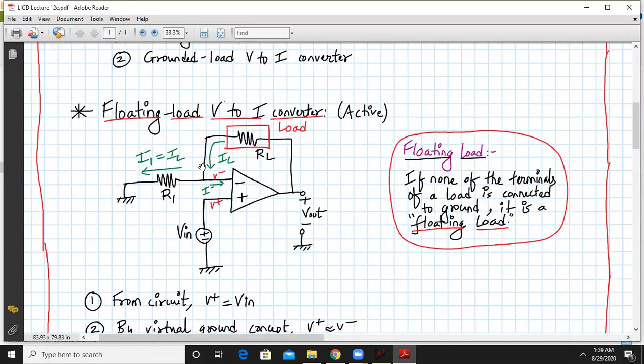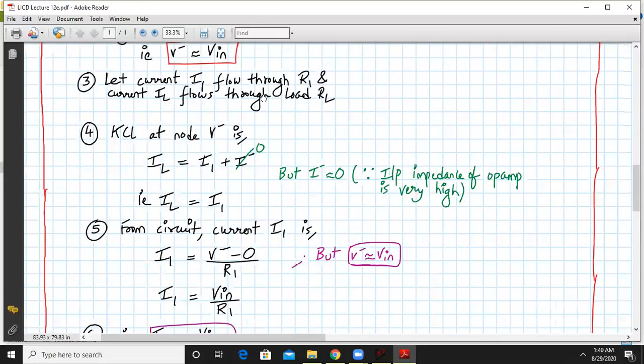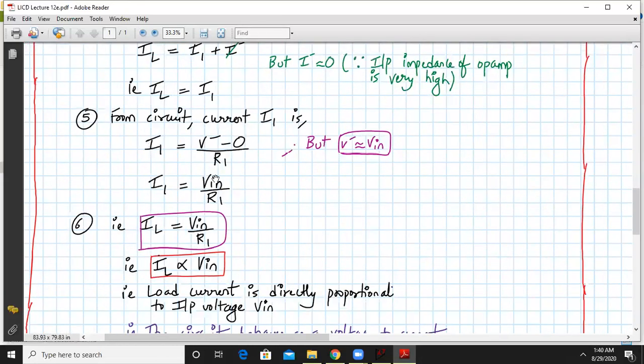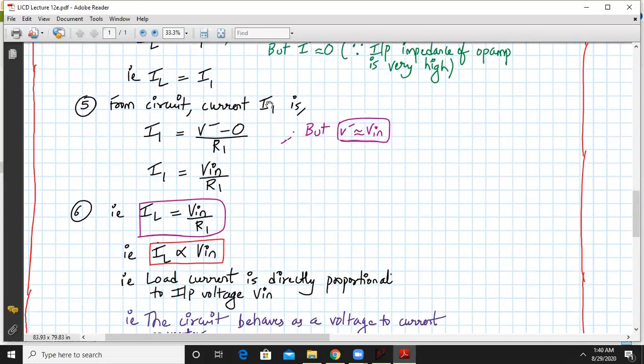IL equals I1 plus I-, but I- equals zero since the input impedance of the op-amp is tremendously high. Hence we can write IL equal to I1. From the circuit, I1 will be V- minus 0 upon R1. But V- is approximately equal to VIN by virtual short technique, so I1 equals VIN upon R1. Similarly, IL equals VIN upon R1. That means IL is proportional to VIN because R1 is a constant.